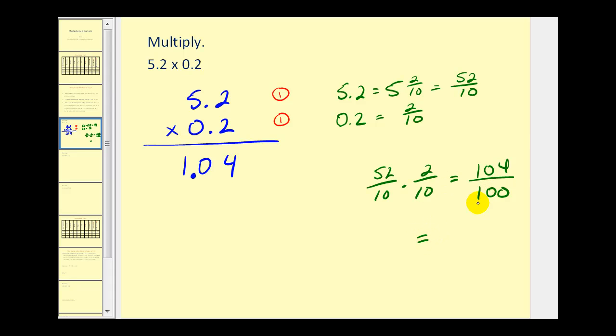This is an improper fraction that can be written as 1 and 4 hundredths, which obviously matches our product in decimal form. So the reason we're summing the total number of digits to the right of the decimal is because we're really determining what the denominator would be in fraction form as some power of 10.